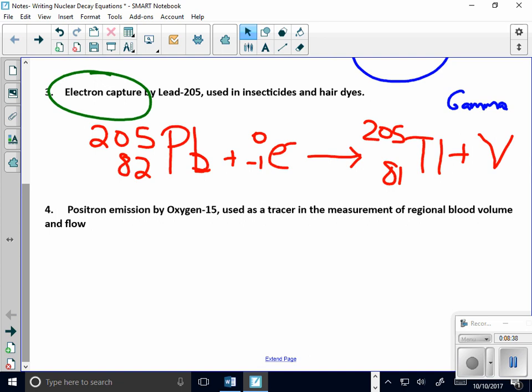Now, the last one is the fourth type. It's positron emission. Now, in your notes on positron emission, it states that this process is similar to electron capture in that a proton is changed into a neutron. However, in positron emission, a proton emits the positron.